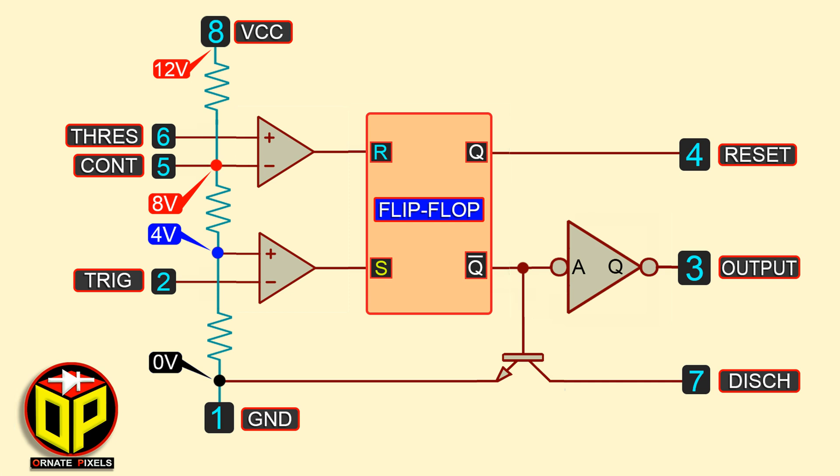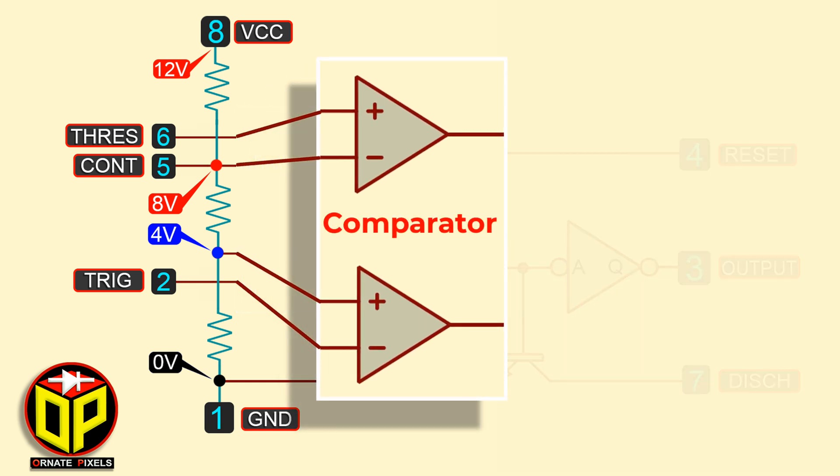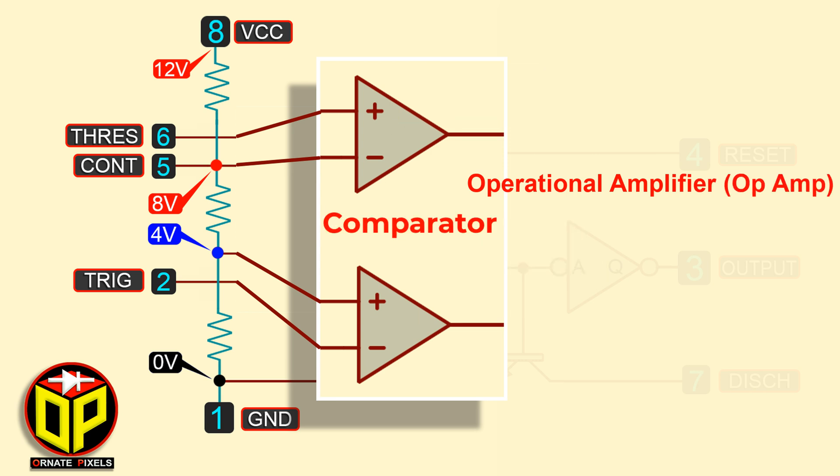Now, let's see the next section has. This is the comparator section which consists of two operational amplifiers. This op-amp is configured in open-loop.